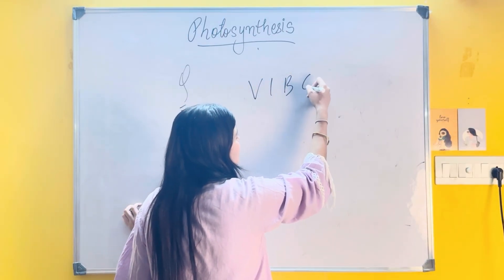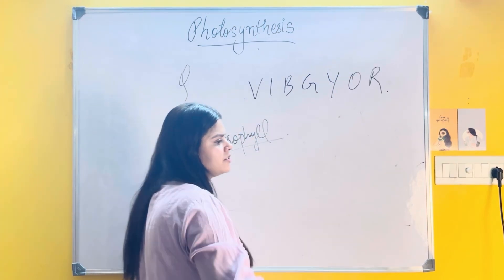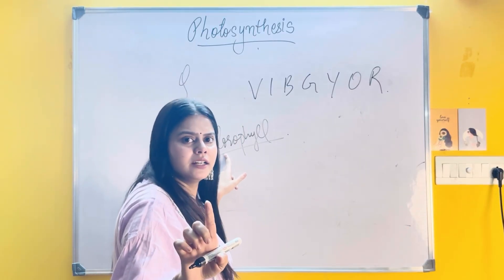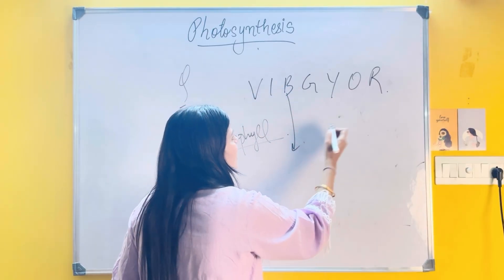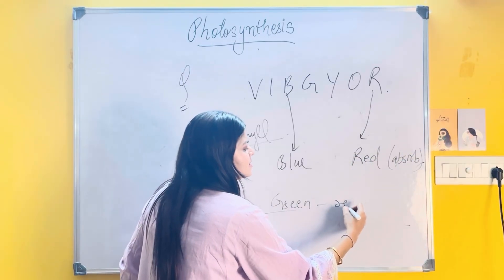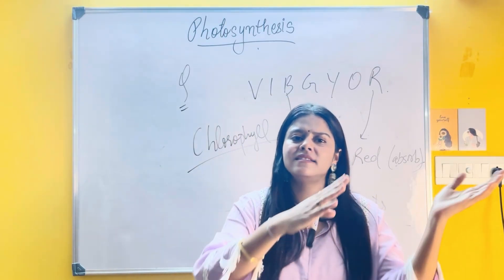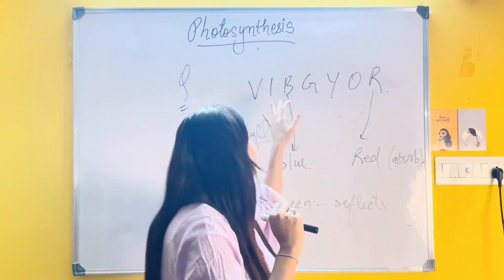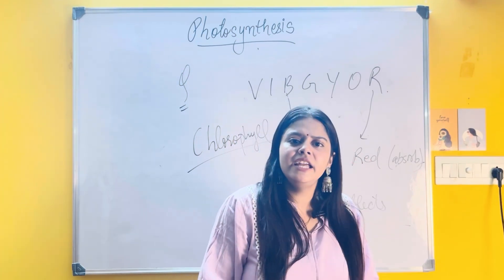All of you have heard of the VIBGYOR spectrum from physics. Talking about chlorophyll — a possible MCQ question given in your Selina textbook: chlorophyll absorbs light from both ends of the spectrum. It absorbs blue light as well as red light, but it reflects green light. That is why it appears green. So if they ask which colors of light chlorophyll absorbs, the answer is blue and red from both ends of the spectrum, while it reflects green light.